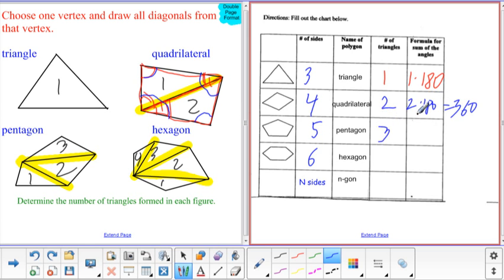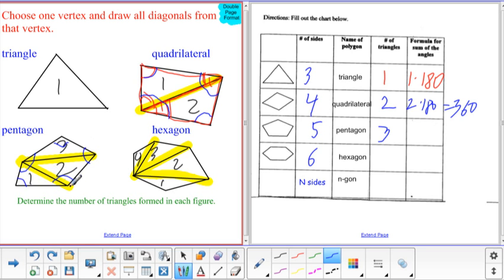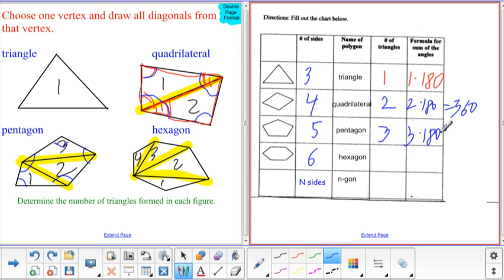And we can continue to use that to help us figure out the angles in each of those figures. Since the pentagon had three triangles, all the angles in those triangles form the angles in the pentagon. So we can just calculate the sum of the angles in those three triangles, which is just three 180s, which happens to be 540. We can keep going like this. The hexagon has four, so that's four triangles, four 180s, which is 720.